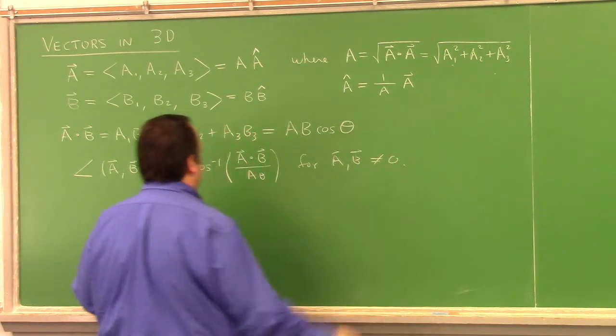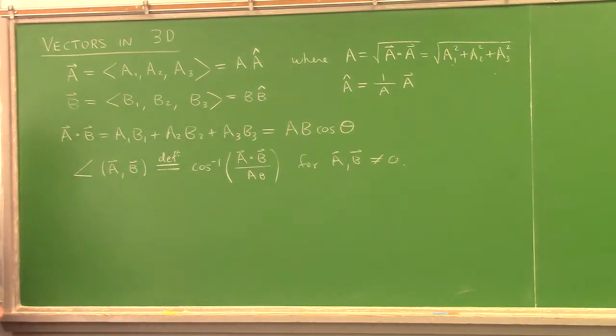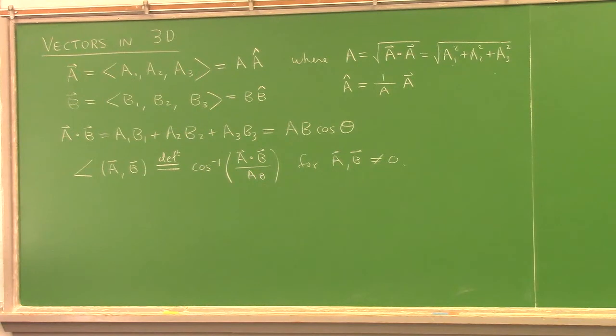The angle from A to B is defined by the inverse cosine of (A dot B) divided by (|A||B|) for non-zero vectors. That actually gives a concrete, algebraic definition for angles.